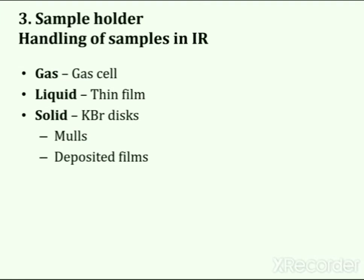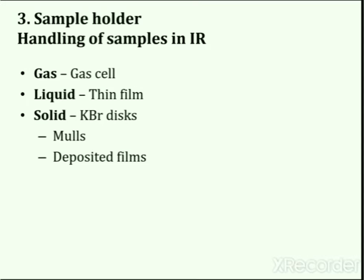The next part is the sample holder, which is used for holding the sample. Sampling techniques in IR depend on whether the sample is a gas, liquid, or solid. For gas samples, a gas cell is used. For liquid samples, a thin film is made by depositing on a hot surface. Solid samples are handled by making KBr discs, deposited films, or by using the mull technique.